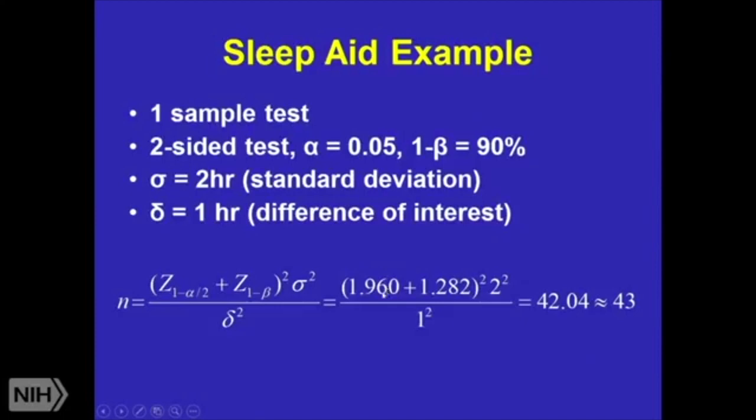So for an alpha equals 0.05 two-sided test, my Z value is 1.960. For the 80% power, my Z value is 1.282, add those together and square it. My standard deviation was two, so I'm going to square that so I have four for my variance. A difference of interest is 1 squared is 1. If I calculate this, it says I need 42.04 people in my sleep study, which means I need at least 43.